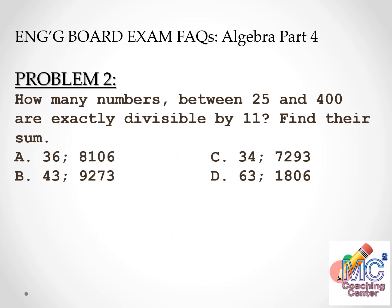Problem number 2: How many numbers between 25 and 400 are exactly divisible by 11? Find their sum. The closest number greater than 25 that is divisible by 11 is 33. The series continues: 33, 44, 55, and so on, up to 385 and 396. So 33 is the first term and 396 is the last term. This is still an arithmetic progression.